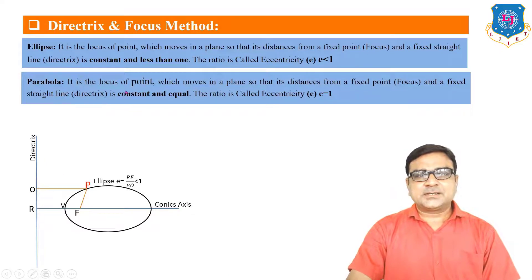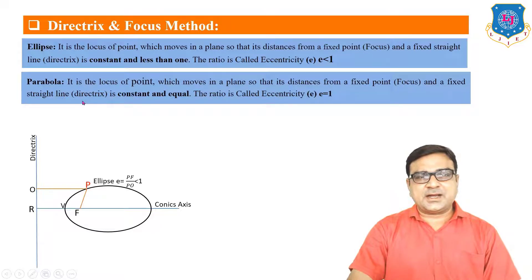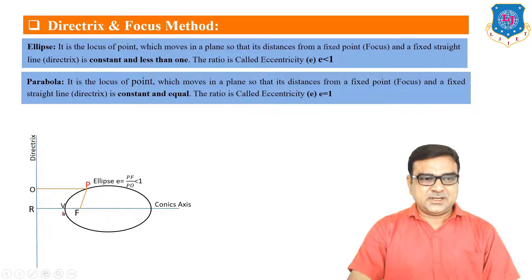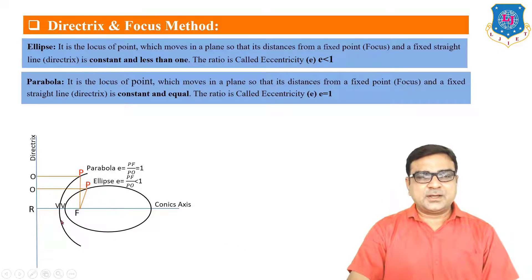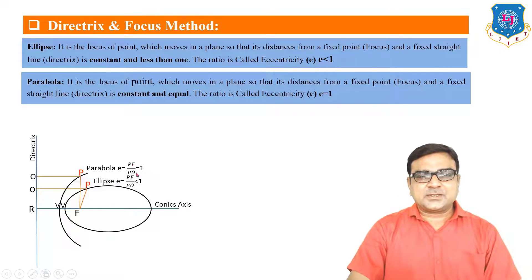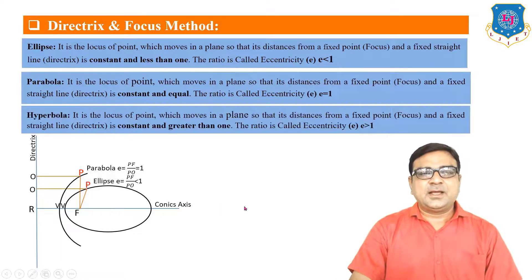For a parabola, it is the locus of a point which moves in a plane so that its distance from a fixed point and a fixed straight line, the directrix, is constant and always equal to one. So for a parabola, the distance from point P to the focus equals the distance from P to the directrix, making the eccentricity always equal to one. For a hyperbola, this ratio is always greater than one.